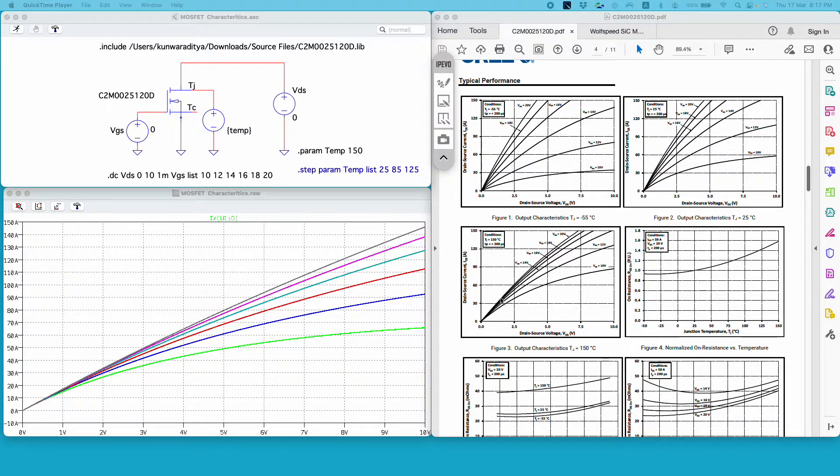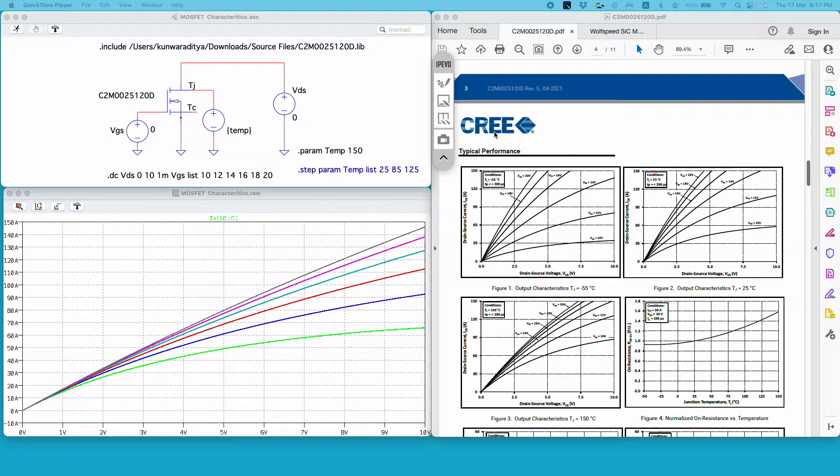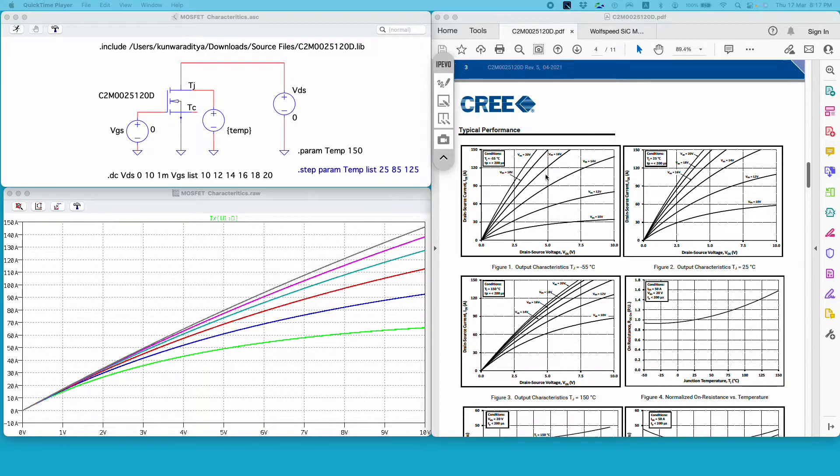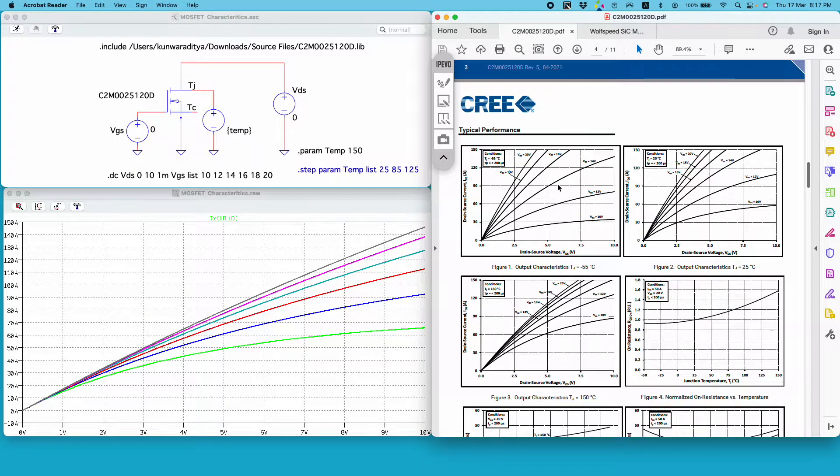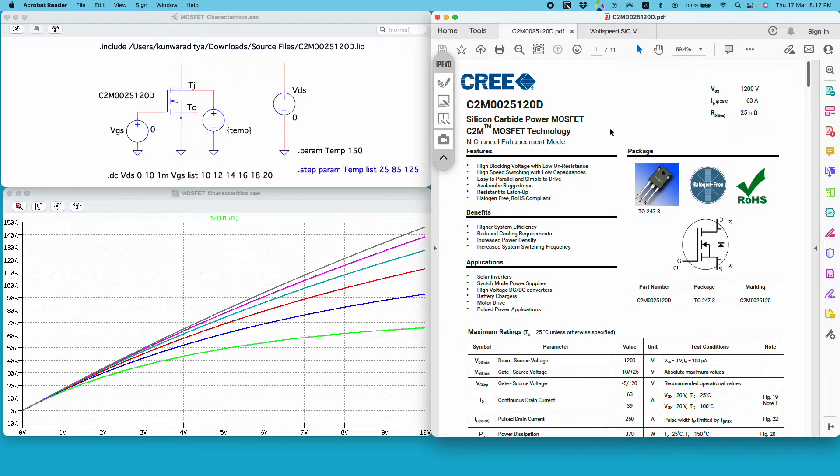Hello everyone, my name is Kumar Aditya and in this video I will show you the characteristics of a silicon carbide MOSFET from Cree, also known as Wolf Speed. I have downloaded this MOSFET model from their website and this is the datasheet of that particular MOSFET.